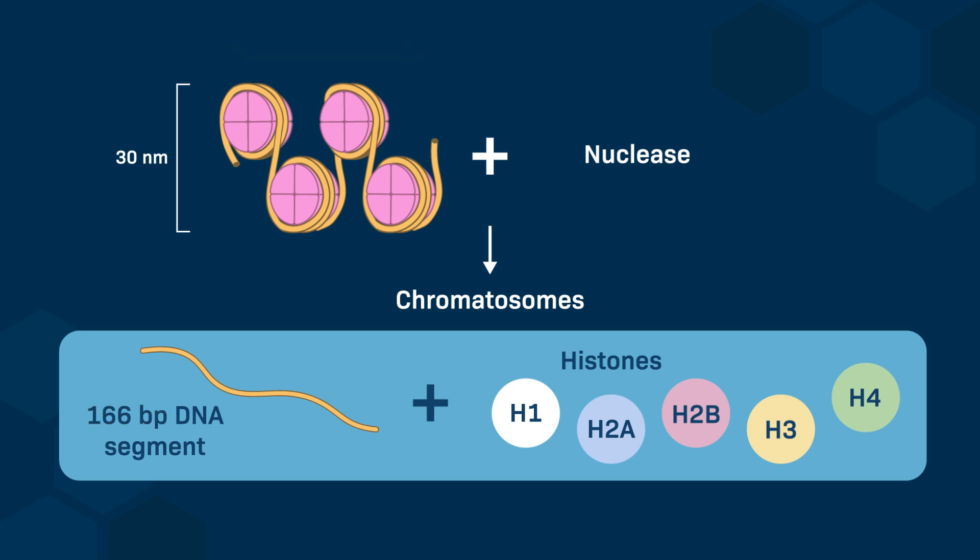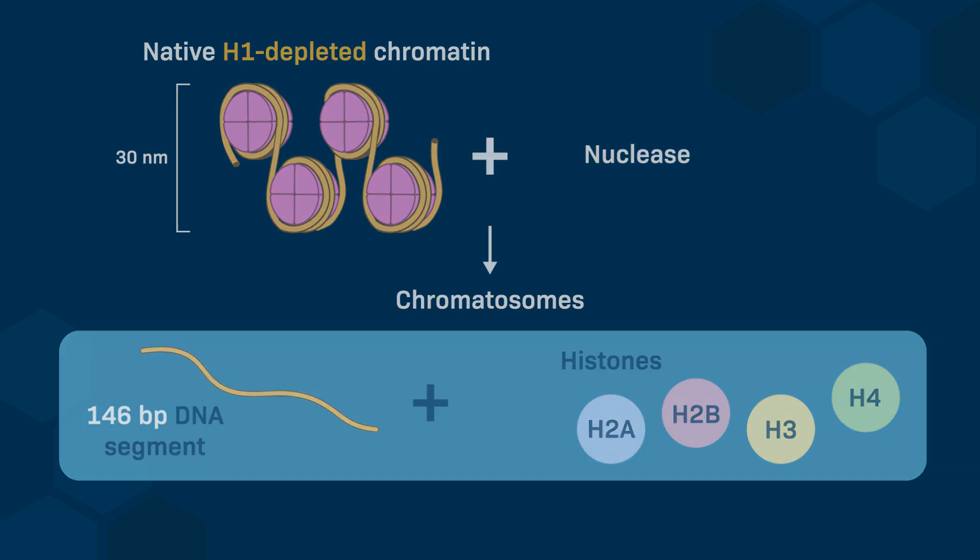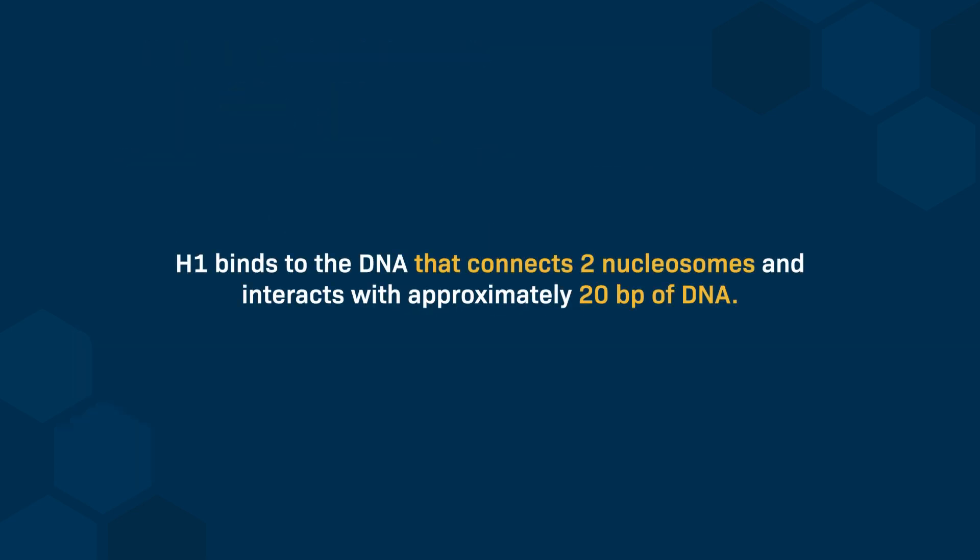In contrast, if the same experiment is done in chromatin that lacks histone H1, the region of the DNA that is protected from the nuclease is reduced to 146 base pairs. This suggests that about 20 base pairs in the internucleosome linker DNA are protected by histone H1. H1 therefore binds to the DNA that connects two nucleosomes and interacts with approximately 20 base pairs of DNA.